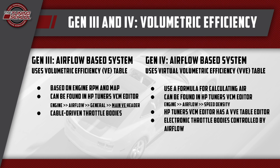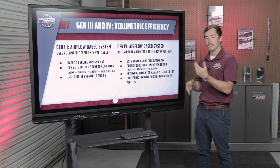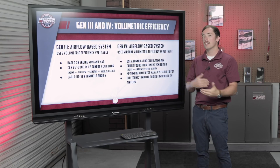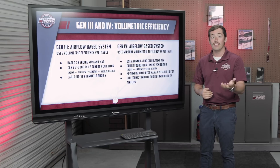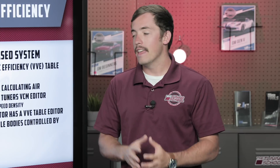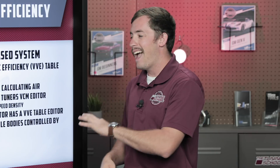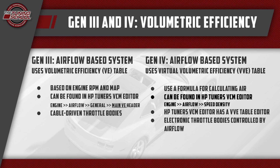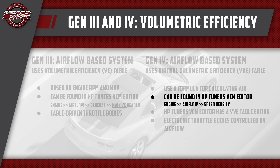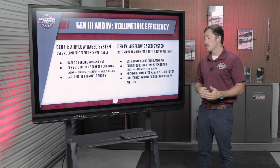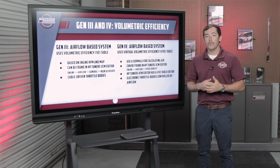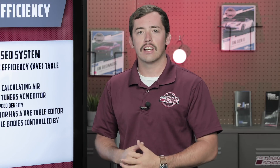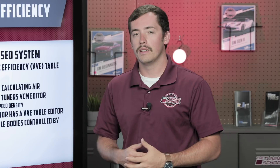The Gen 4s, much like the Gen 3s, are also airflow-based — both computers are airflow-based. One distinctive difference is that instead of using a traditional VE table, Gen 4 uses something called a Virtual Volumetric Efficiency Table, or VVE for short. This is actually a formula that calculates the amount of airflow coming in, with a lot of coefficients going into the calculation. This can be found in the HP Tuners editor under Engine, Airflow, and then Speed Density, where you'll see all of those coefficient tables. HP Tuners actually created a Virtual VE Editor a few years back, which allows you to edit the coefficient tables in the background with a more graphical interface.